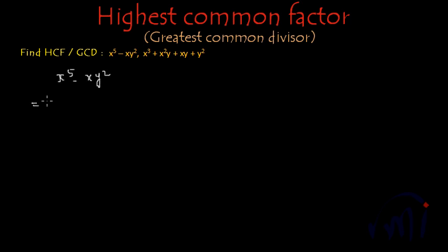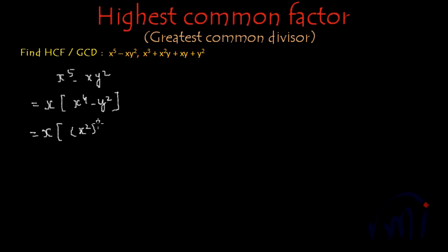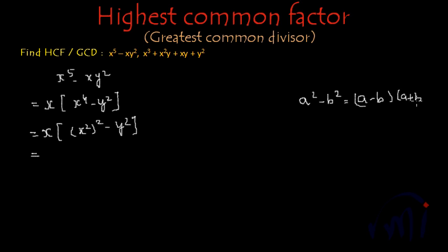Here x can be taken common and inside the bracket we will be left with x to the power 4 minus y squared. And this can be rewritten as x squared whole squared minus y squared. Now we can use the formula of a squared minus b squared which is a minus b multiplied by a plus b. So here we will get x multiplied by x squared minus y, multiplied by x squared plus y.